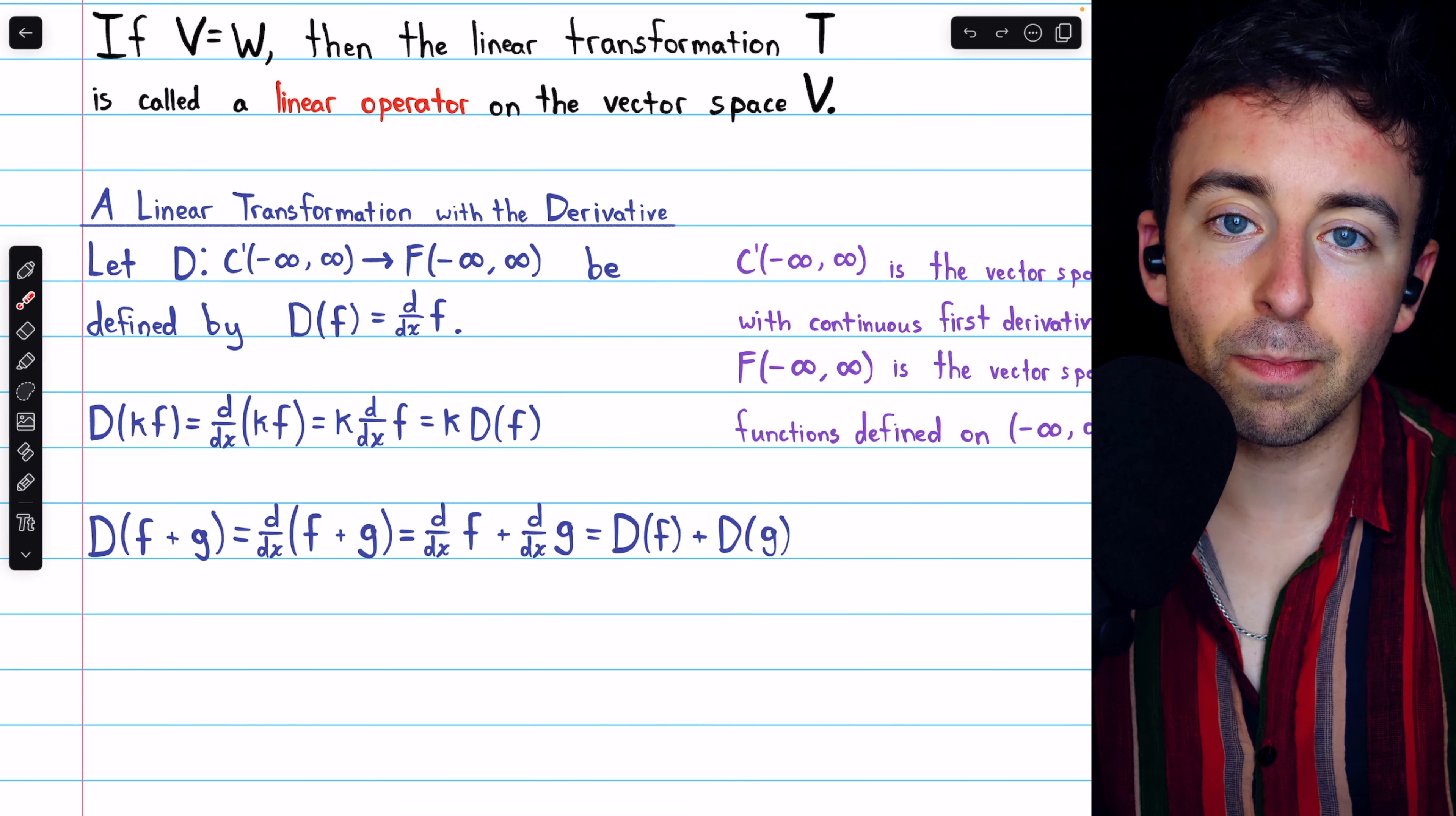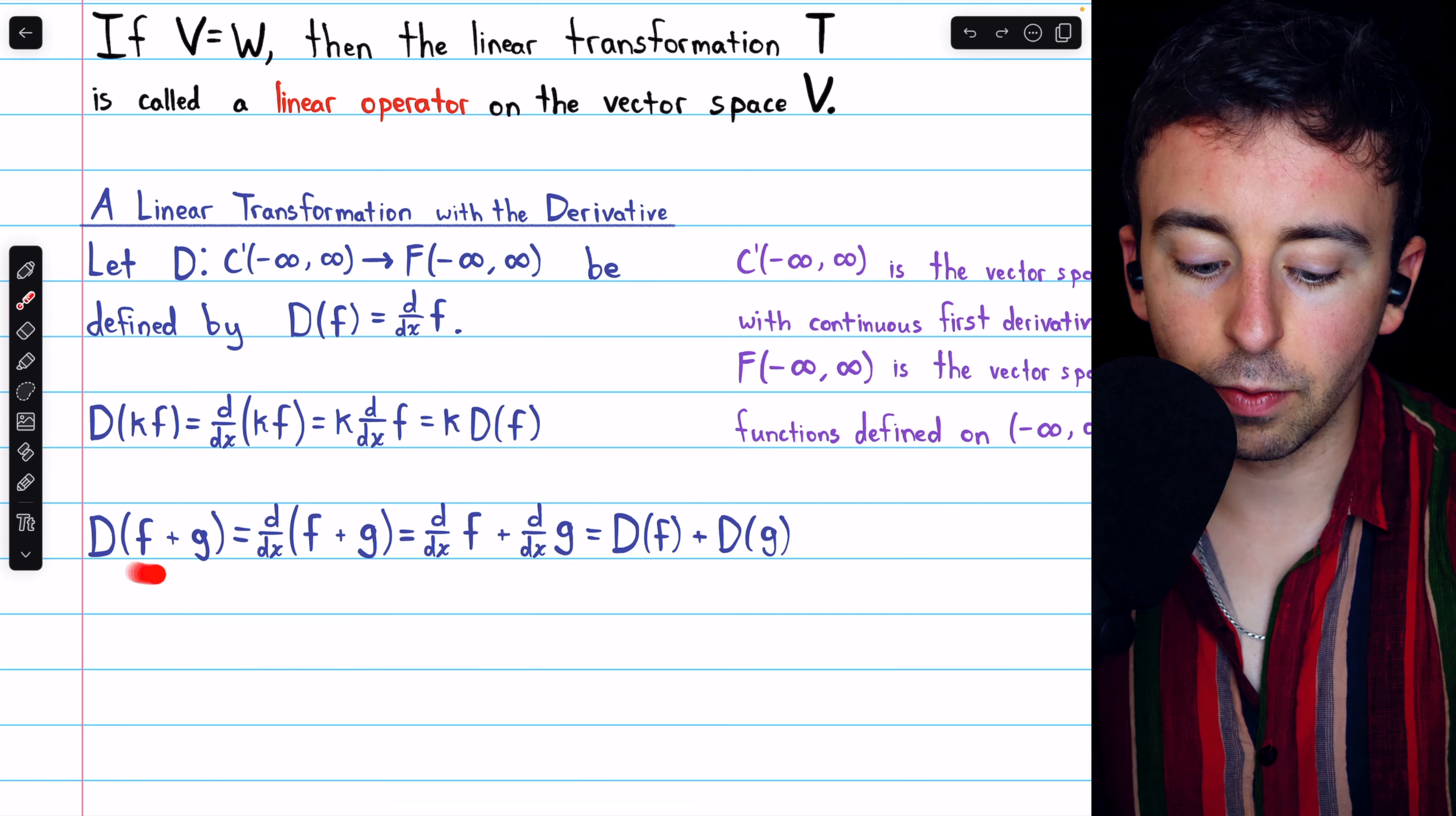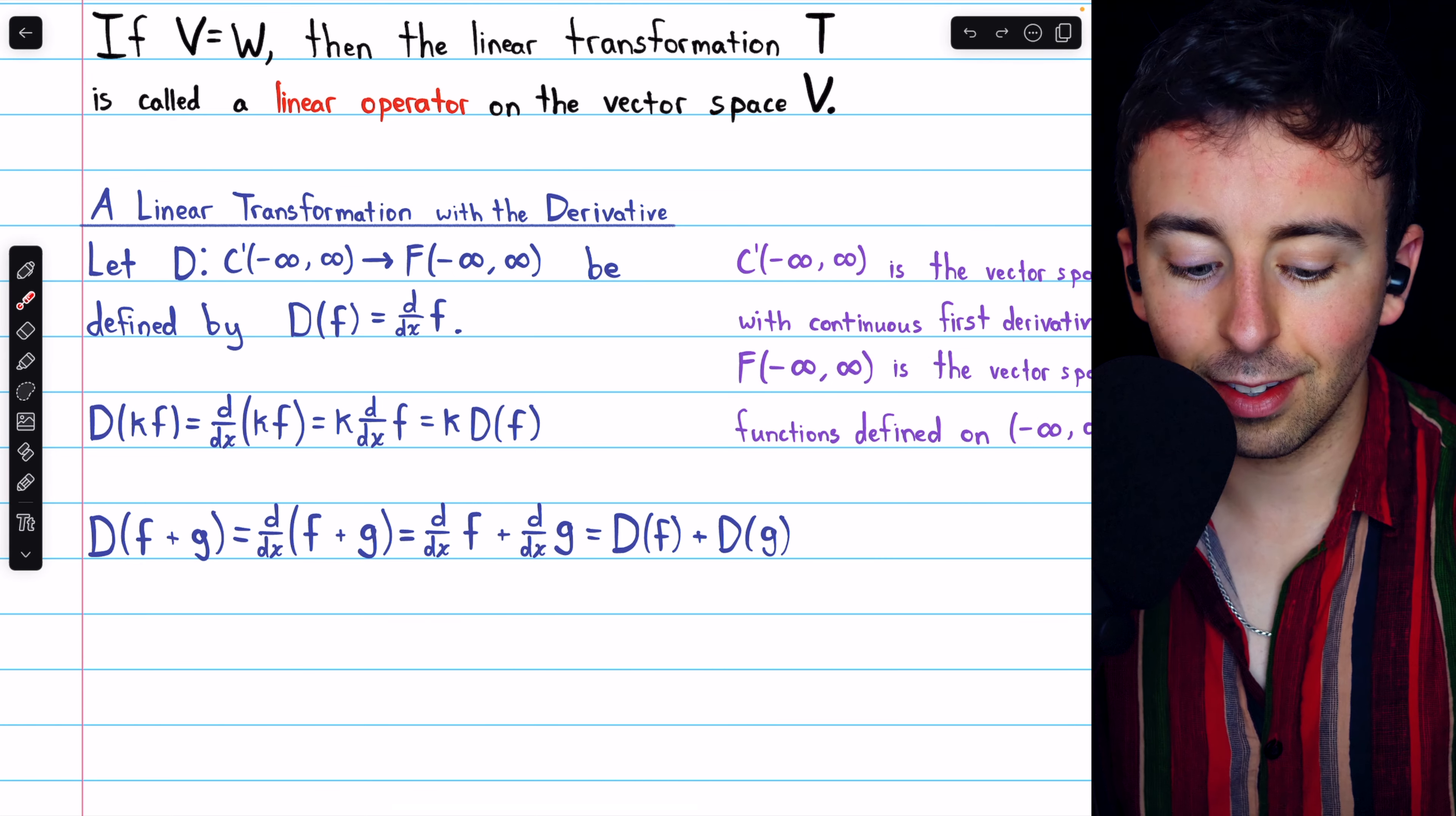A scalar can just be pulled out of the derivative operator, so it satisfies the homogeneity property. The additivity property is similarly familiar.